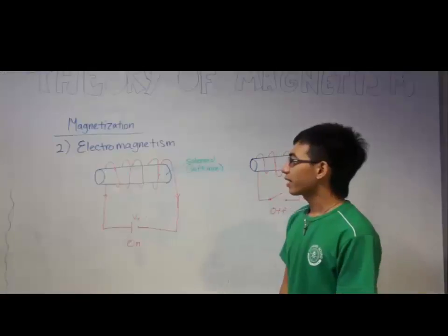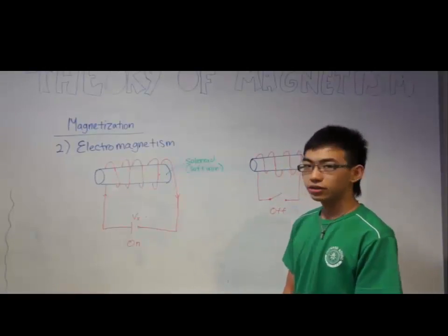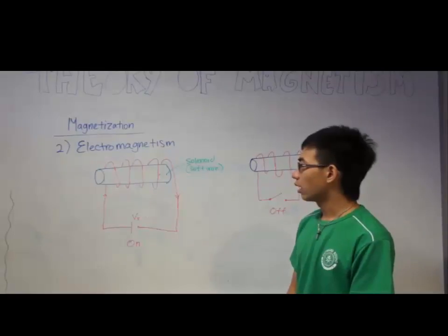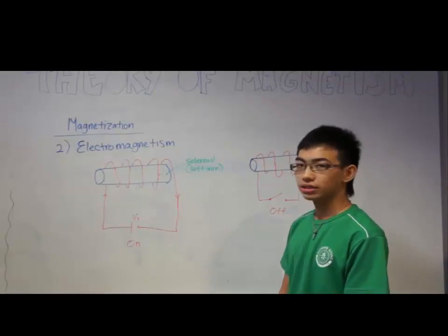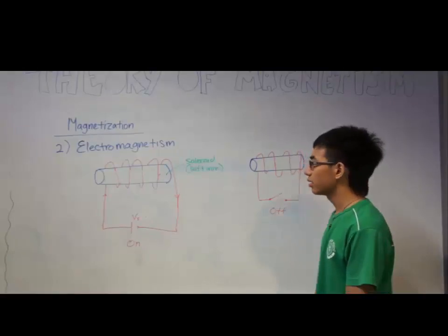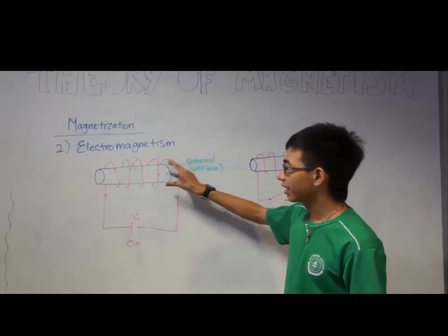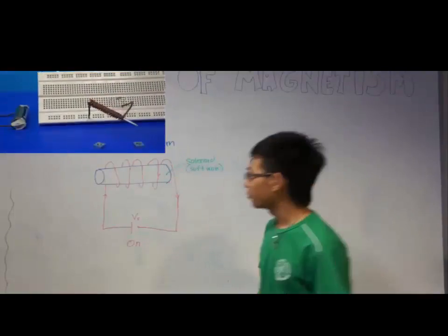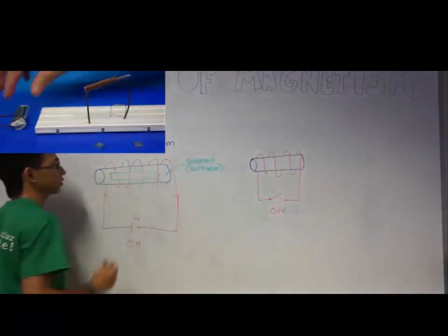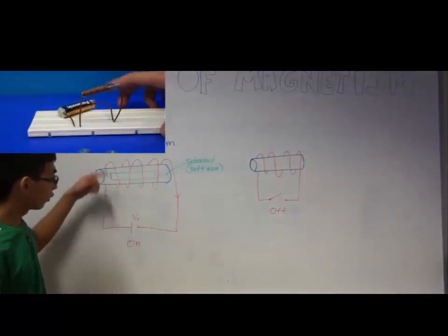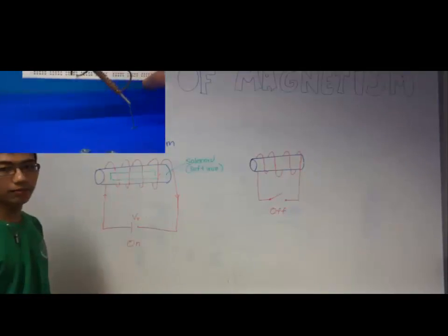Another way of magnetizing an unmagnetized bar is through electromagnetism. What is electromagnetism? Electromagnetism is passing a direct current through a coil of wire, which is known as a solenoid. This is a coil, and inside the coil there's an unmagnetized bar.